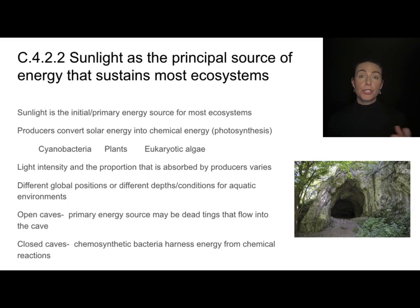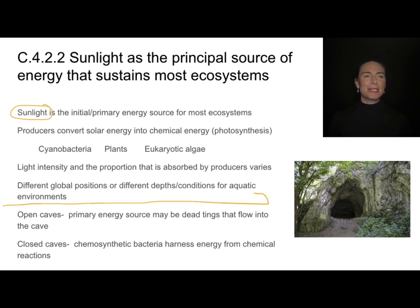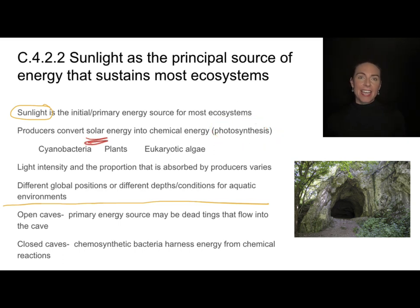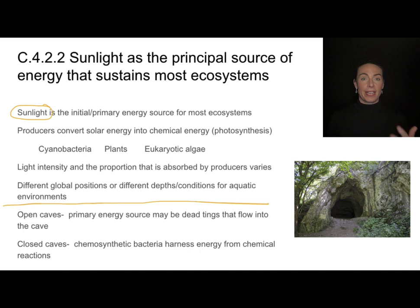The primary energy source for most ecosystems is sunlight. Most ecosystems utilize sunlight as their primary energy source. Who's making use of that energy? That is producers. One of the cool things about producers — things like cyanobacteria, plants, algae — is they can convert solar energy into chemical energy. They use photosynthesis to take that light energy and make things like carbohydrates, amino acids, or lipids so that the rest of the food chain can benefit from that chemical energy.